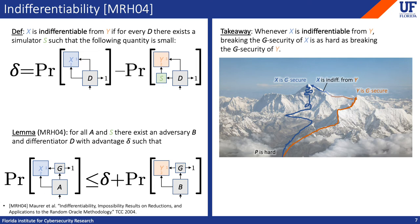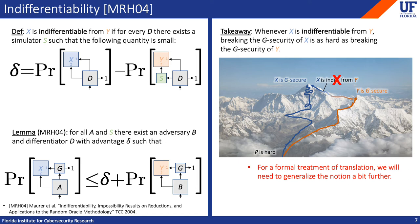So we're at the top of the mountain, right? Not quite. This notion — the usual notion of indifferentiability — is not yet suitable for a formal treatment of secure translation. Indifferentiability is normally used to reason about relatively simple objects like hash functions or block ciphers. The objects we're interested in, like authenticated key exchange, are more complex. So to deal with this complexity, we'll need to generalize the notion a bit further.